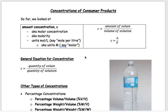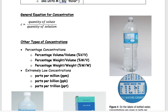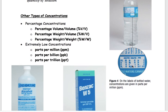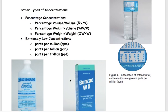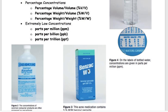Welcome to the parts per and percentage concentration lesson. Examples of parts per include parts per million and parts per billion, and percentage examples include things like 40% alcohol. These are typical examples of concentrations used with consumer products. We'll look at things like water, which has units measured in parts per million, and different household products that have percentage concentrations.